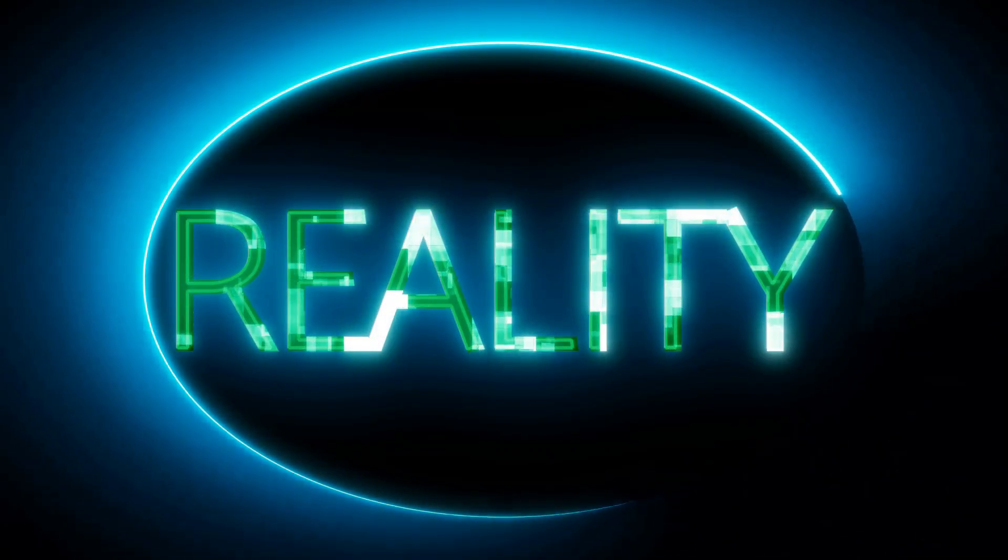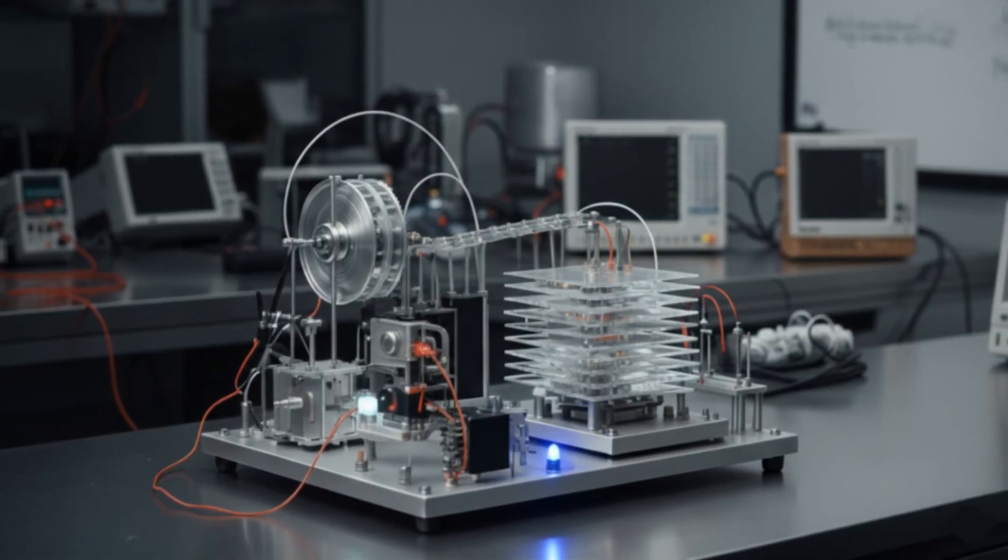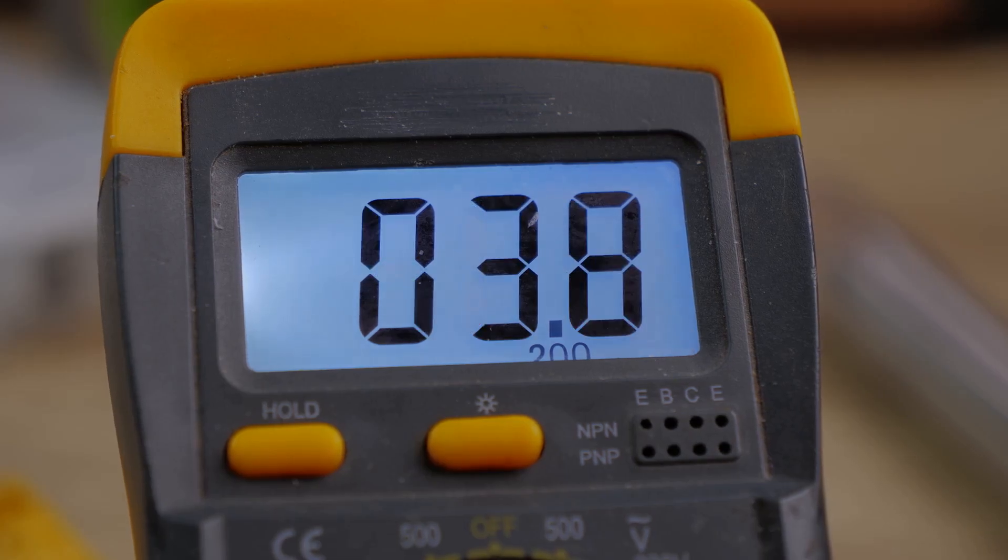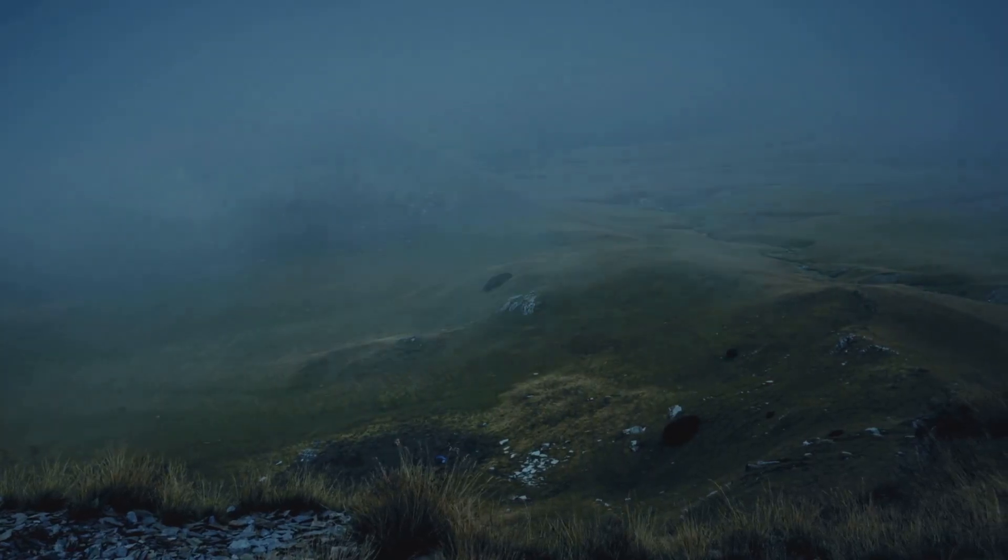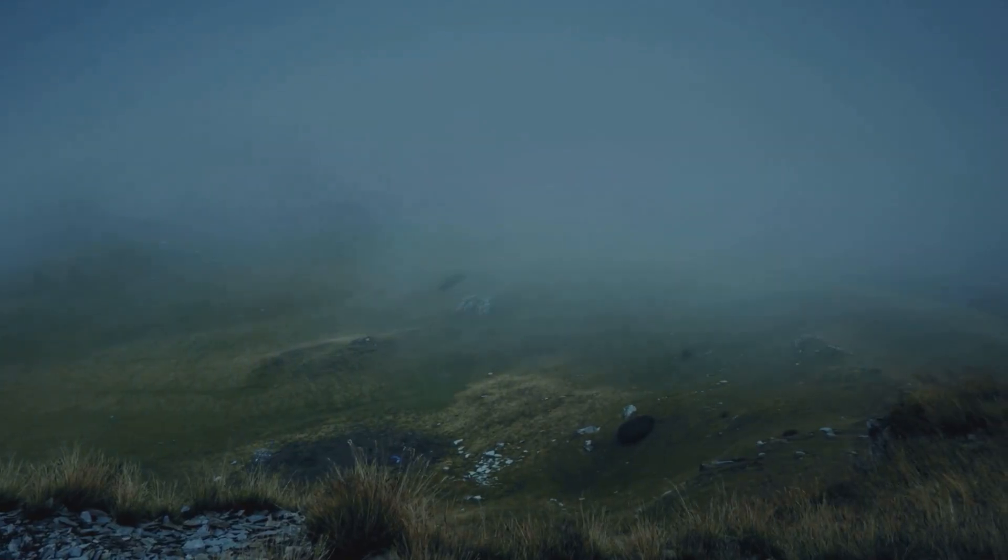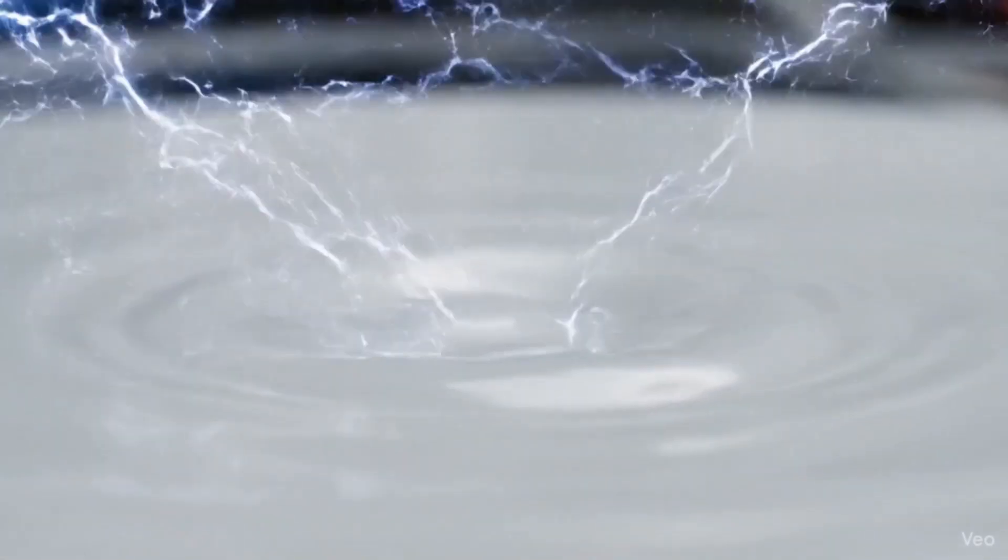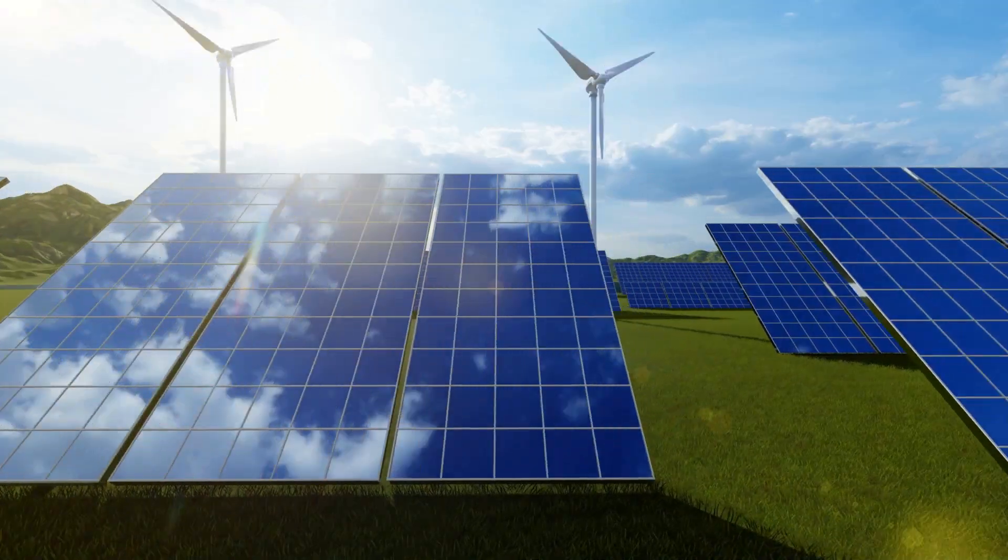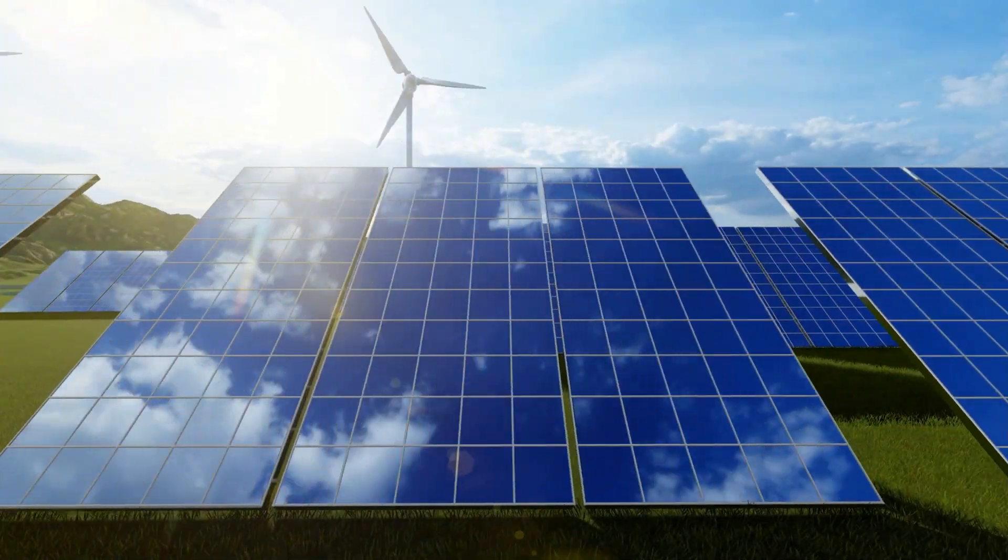Now, for the reality check. For all its brilliance, this technology faces major hurdles. The biggest criticism is power output. Let's put it in perspective. In the rainiest inhabited place on Earth, a 1 square meter rain harvesting panel would generate about 0.138 kilowatt hours of energy per year. A standard solar panel of the same size can generate that much in less than an hour on a sunny day.